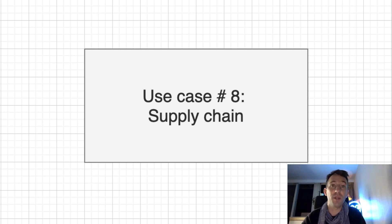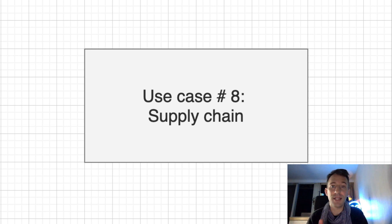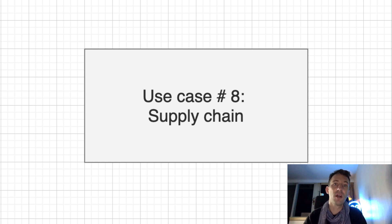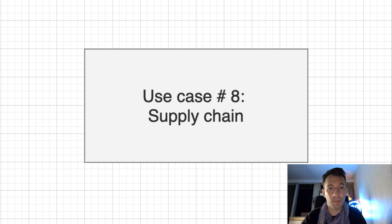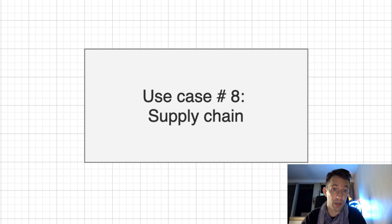Another use case of blockchain is supply chain. If you buy medicine or a luxury item, you want to be sure that the product you buy is not a counterfeit. We could have a system where each product has a serial number and every time it's sold to someone else, this is reflected on the blockchain. As a buyer, when you purchase the product, your wallet will be able to track the origin of the product.